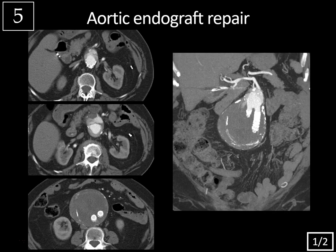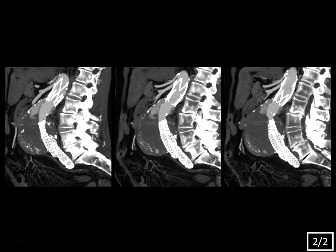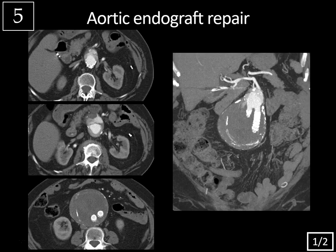Last case, history of aortic endograft repair, CT angiographic images. This was an ovation endograft. So here we're looking at axial images on the left-hand side, and you can see that there's a large abdominal aortic aneurysm here, infrarenal, and then there are the iliac limbs of the stent graft. You don't see any endoleak at this level — just non-opacified aneurysm sac. But at the superior aspect of the endograft, you do see this contrast pooling anteriorly. Whenever you see contrast at the superior aspect of an endograft, you worry about a type 1a endoleak.